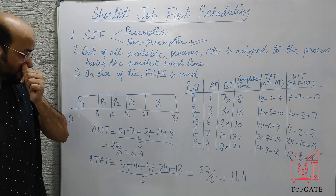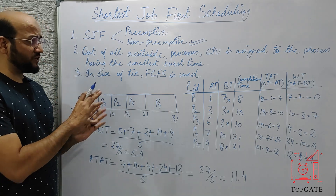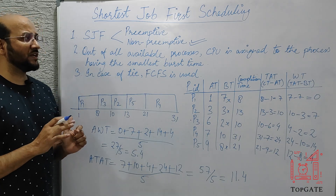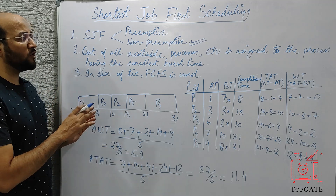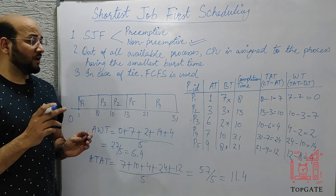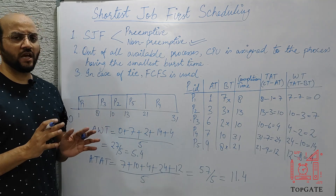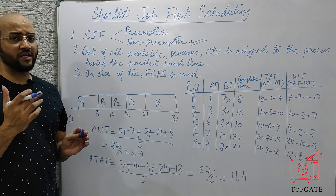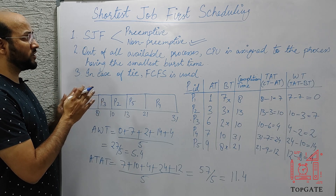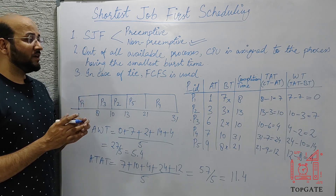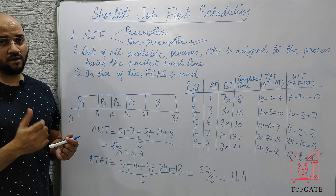The most interesting property of SJF is that out of all CPU scheduling algorithms, SJF gives the shortest average waiting time. So if any question asks which algorithm produces the minimum average waiting time, the answer is Shortest Job First.